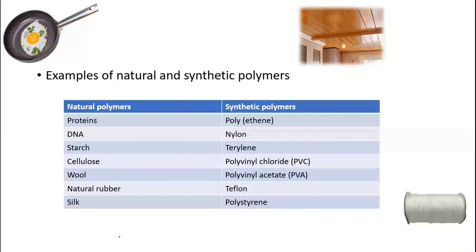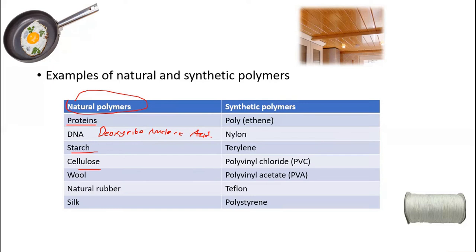Here are some examples of natural and synthetic polymers. Natural polymers include proteins, DNA (deoxyribonucleic acids), nucleic acids, cellulose, natural rubber, and silk. Synthetic polymers can be made in the laboratory — like polyethene, which is made by combining ethene with another ethene. Other synthetic polymers include nylon, terylene, PVC (polyvinyl chloride), polyvinyl acetate, Teflon, and polystyrene. Teflon, for example, is a synthetic polymer used for cooking.